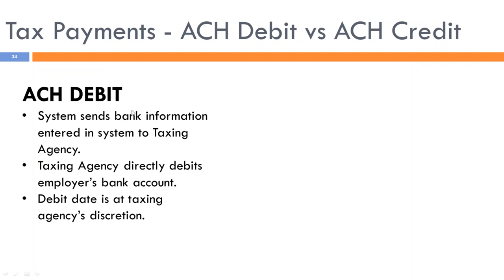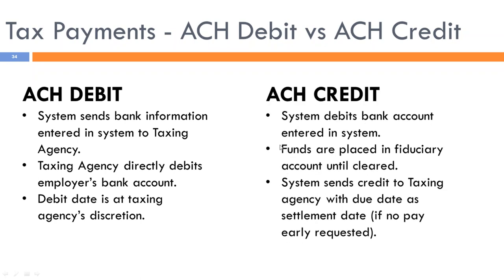ACH debit means the system sends bank information to the taxing agency, which directly debits the employer's bank account. The debit date is at the taxing agency's discretion — Accountants World has no involvement with the funds. ACH credit is where the system debits the bank account entered in the system, places the funds in a fiduciary account until cleared (confirming no NSF), then sends the credit to the taxing agency with the due date as the settlement date — unless you've requested pay early. With ACH credit, the payment is detached from the form: the form gets e-filed and the payment gets processed separately.